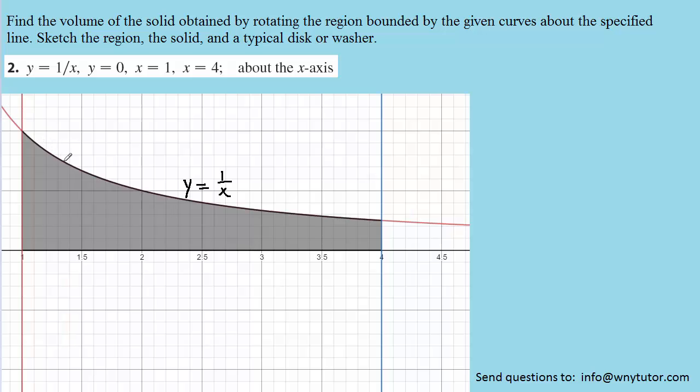And so we have the curve that kind of slopes downward here, and that curve is y equals 1 over x. And then the x-axis itself is the graph of y equals 0. And then we have the vertical lines x equals 1 and then x equals 4. And we can see that they mark off this region that we have shaded in gray.